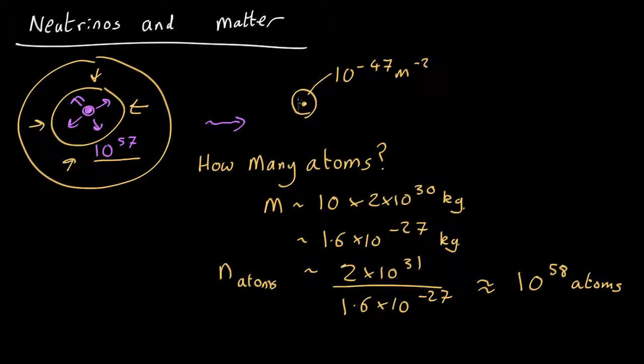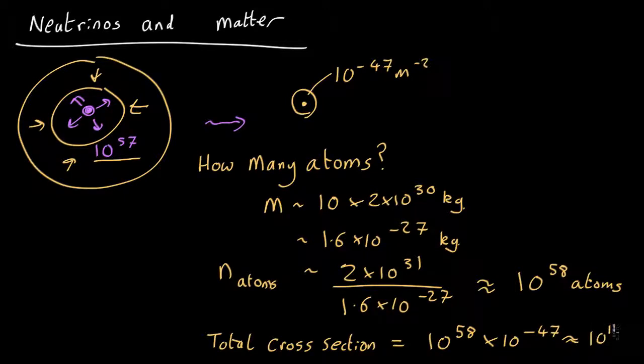So if each atom has a cross-sectional area of 10 to the minus 47, the total cross-sectional area is just 10 to the 58 times 10 to the minus 47, which is about 10 to the 11 square meters.